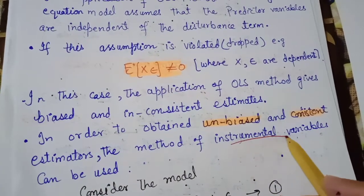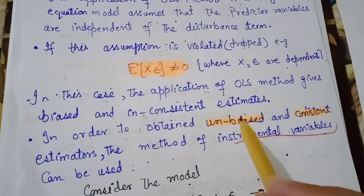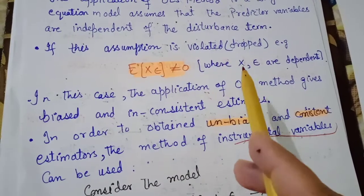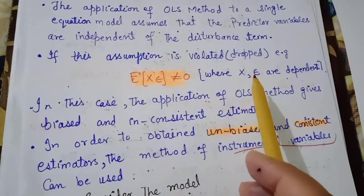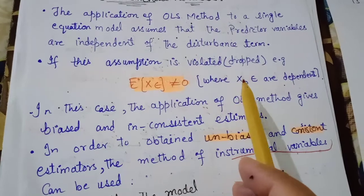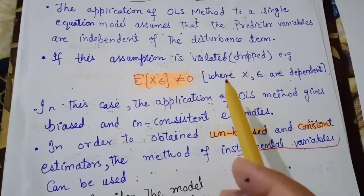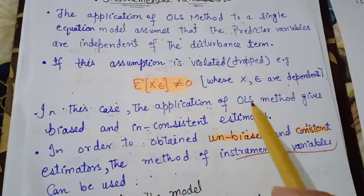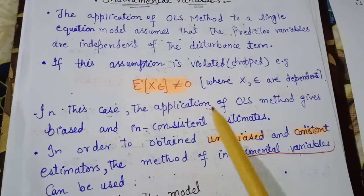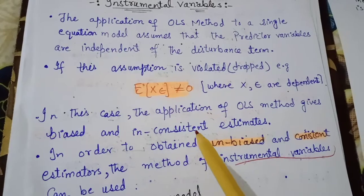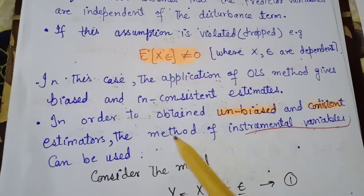Students, you will understand why we use instrumental variables. When predictor variables and epsilon are dependent, the results will not be correct — we get errors. To overcome biased and inconsistent estimates and obtain unbiased and consistent estimators, instrumental variables can be used.